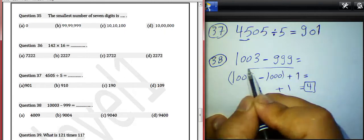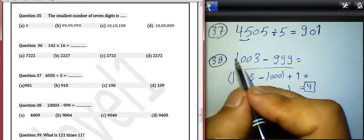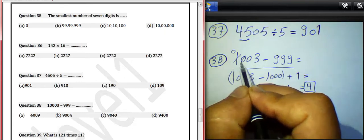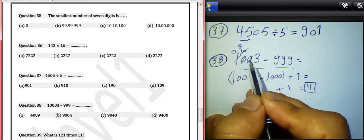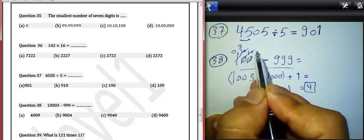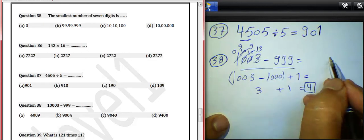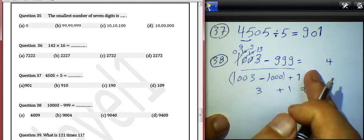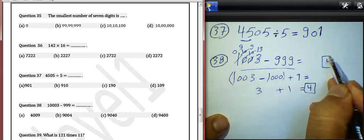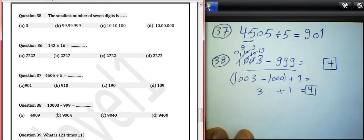Or you can solve it using an easy method: 3 subtract 9 — we can't do it, we must borrow 1 from 0. 0 can't give me, so 1 will be 0, 0 will be 10. We borrow 1 from 10 — 10 will be 9, 0 will be 10. We borrow 1: it will be 9, and 3 will be 13. 13 subtract 9 equals 4. 9 minus 9 equals 0, 9 minus 9 equals 0. The result will be 4. You can use either method as you like. That was question 38.